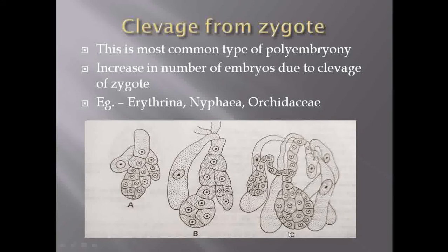There is a formation of two embryos from a single zygote. This is a very common type of polyembryony in which the number of embryos increases due to continuous cleavage of the zygote. This type of embryony is seen in species like Erythrina, Nymphaea, and various members of Orchidaceae.